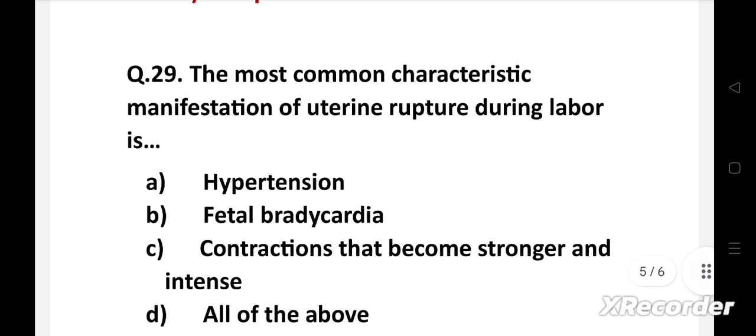Next question: The most common characteristic manifestation of uterine rupture during labor is - Option A: Hypertension, B: Fetal bradycardia, C: Contractions that become stronger and intense, D: All of the above.